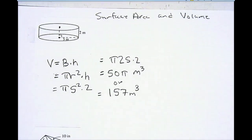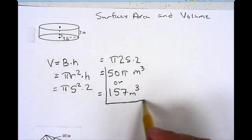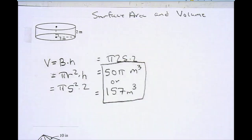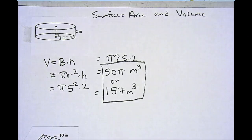I can use either of those answers, and either of those answers are correct. Even though it doesn't look like a real number, the 50 pi meters cubed is an exact answer, and the approximation for that is 157 meters cubed.